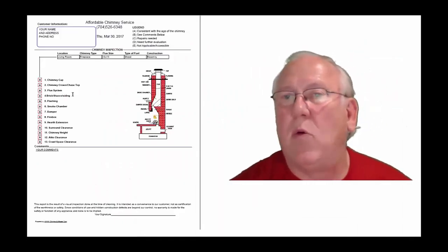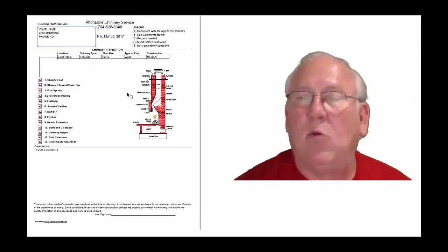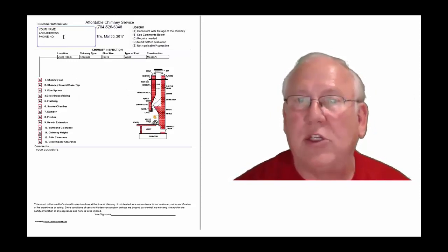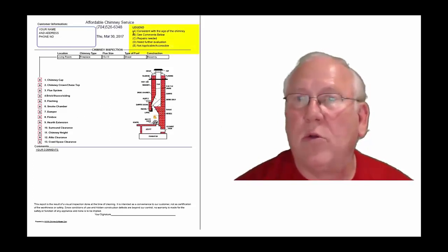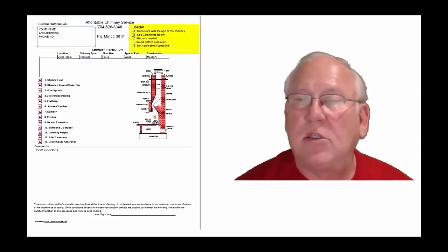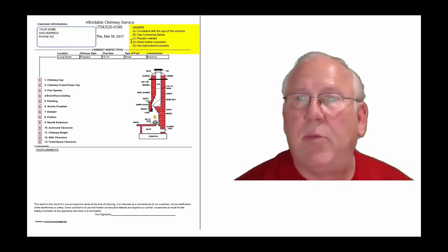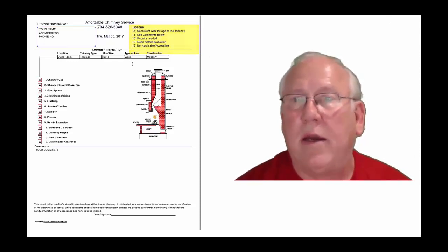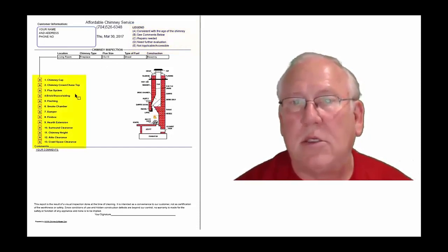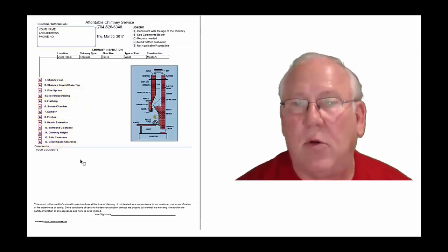Now let's take a look at the inspection report and see how it reads out. This is a generic report — this is exactly what you will get, only your information will be filled into all these blanks. The upper right-hand corner of the report is the legend. Each one of these initials pertain to something: A is consistent with the age of the chimney, B see comments below, C repairs needed, D need further evaluation, or E not applicable. They're placed into the boxes next to the parts of the chimney that can be easily identified in this diagram. And then, of course, you'll find my comments here below.